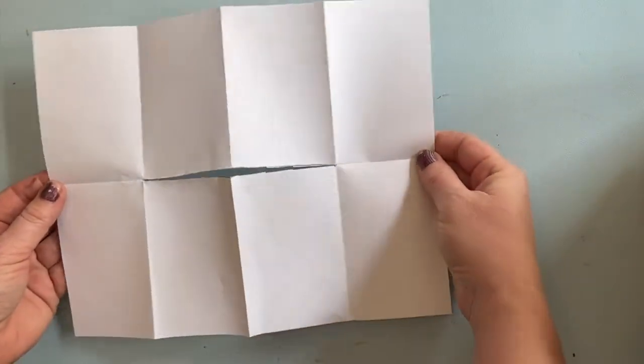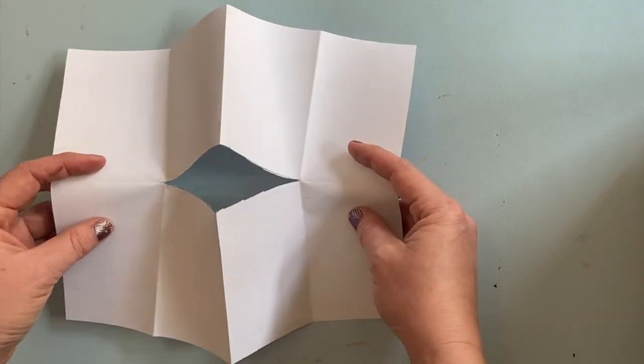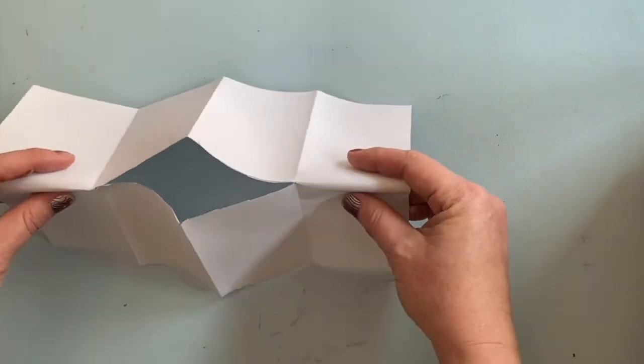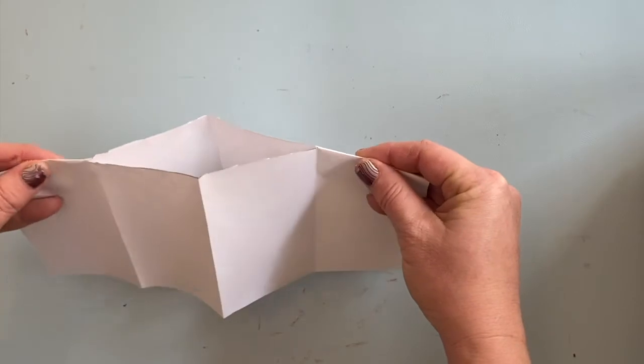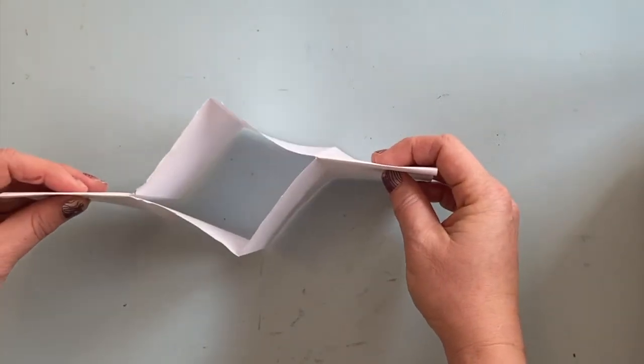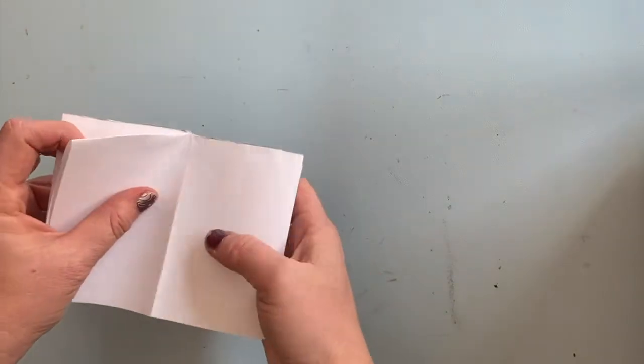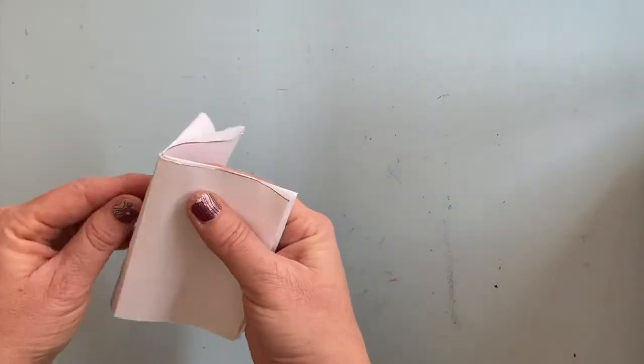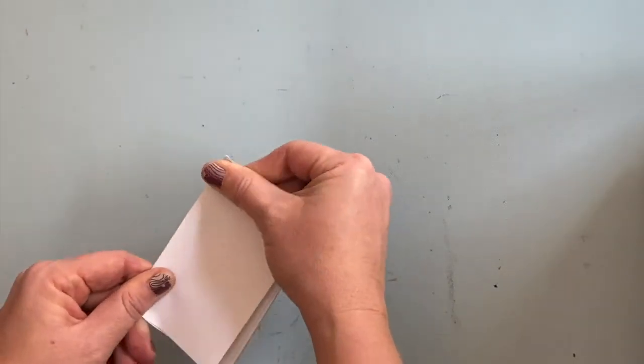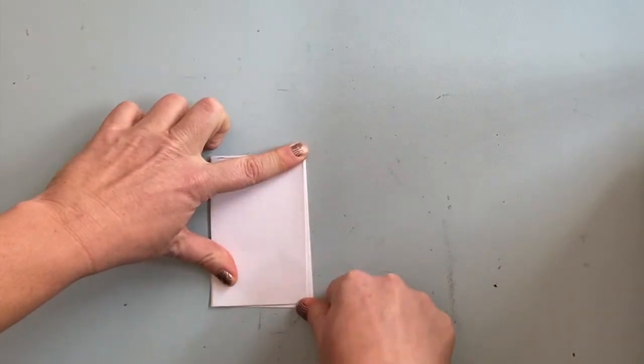Now fold your paper in half lengthwise, hot dog style again, and gently push the pages together until it naturally wraps around. No glue, no tape, no staples. Just make sure it has a nice crease and it will stay together.